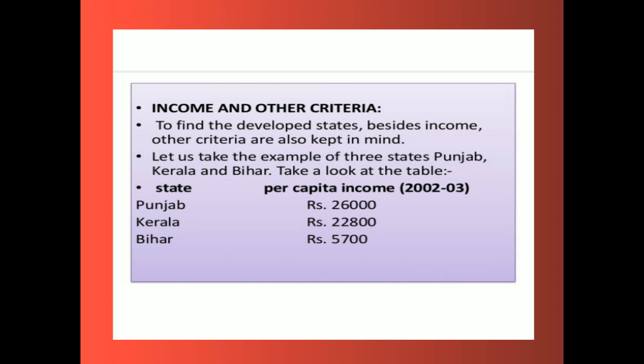Beside income, other criteria are also kept in mind. Let us look at the examples of three states: Punjab, Kerala, and Bihar. Punjab has a per capita income of 26,000, Kerala 22,800, and Bihar 5,700. Punjab is earning more, so per capita income is highest in Punjab.